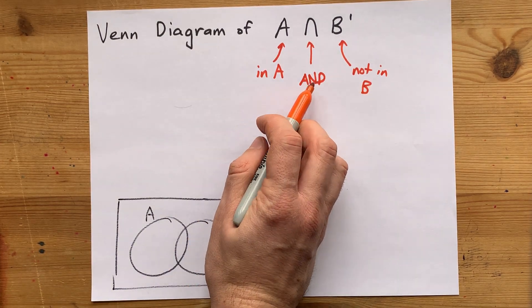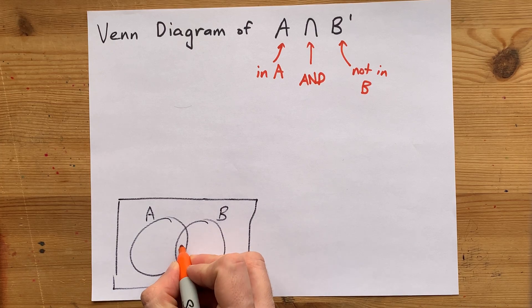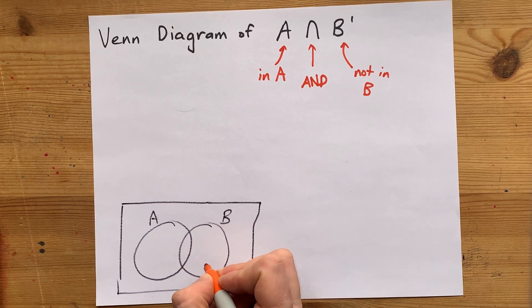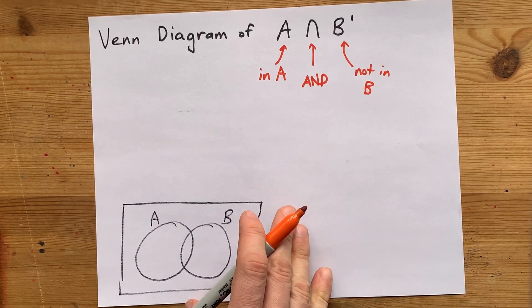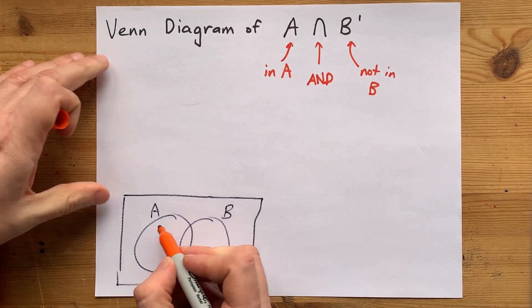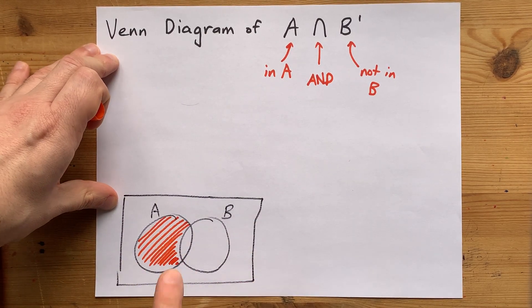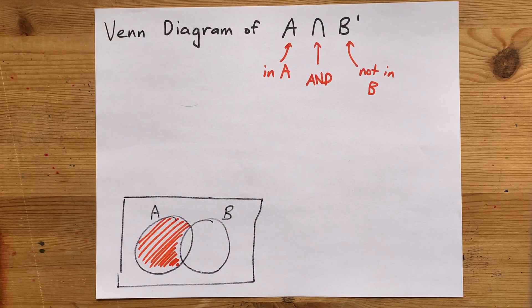And if we require it to not be in B, then we're not allowed to shade this section here because it is inside of the B circle. The only section of this diagram that is in A and also not in B is this section here. Make sure not to go over the line and accidentally shade that section there.